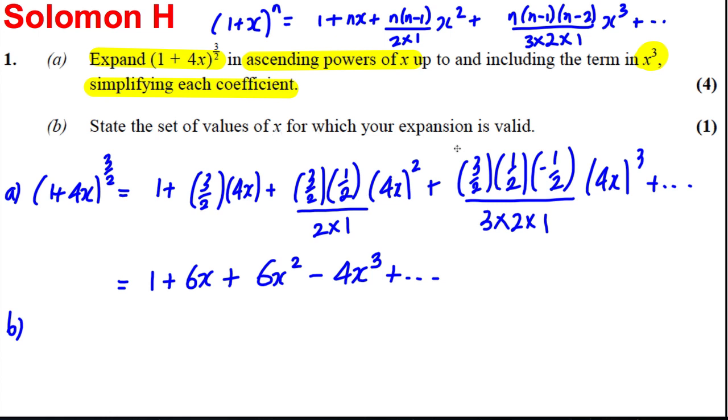Now part (b) asks us to state the values of x for which this is valid. The modulus of this here must be less than 1, so we're going to write down that the modulus of 4x must be less than 1, and that is the same as the modulus of x being less than a quarter. And we're done for five very simple marks there.